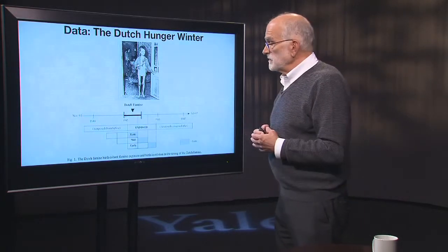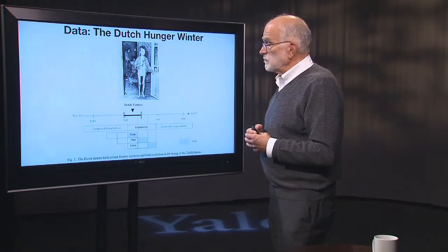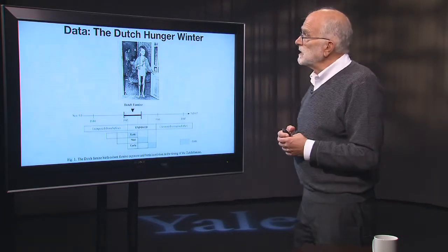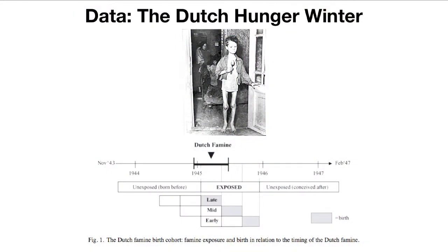Here is some of the data that prompted all of these ideas. It comes from the Dutch Hunger Winter. At the end of the Second World War, between the fall of 1944 and the spring of 1945, the Nazis blockaded the Dutch and essentially tried to starve them to death. They went down to a diet of less than a thousand calories a day.